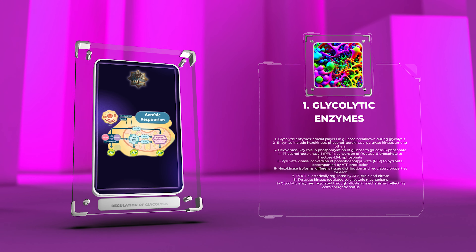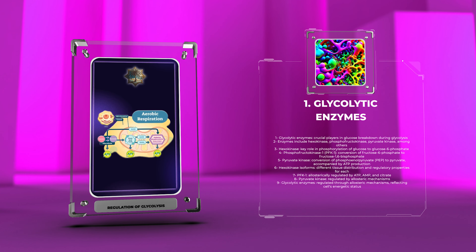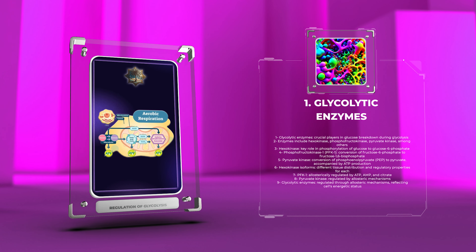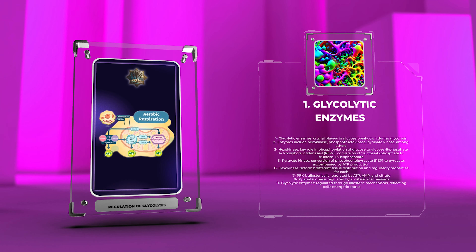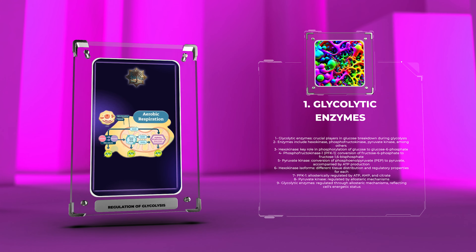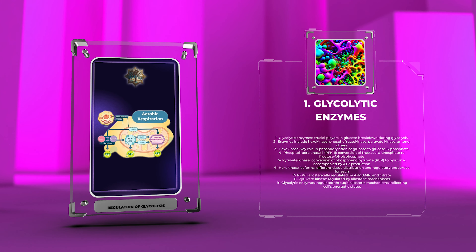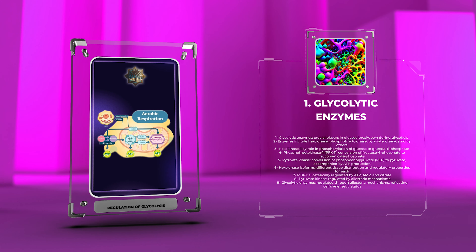Moving on, phosphofructokinase 1, PFK1, is a regulatory enzyme that catalyzes the conversion of fructose-6-phosphate to fructose-1,6-bisphosphate. PFK1 is a crucial control point of glycolysis, as its activity is allosterically regulated and influenced by various factors, including ATP, AMP, and citrate.